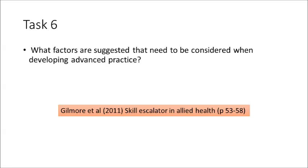For Task 6, read the Skill Escalator in Allied Health paper by Gilmore and answer this question: What factors are suggested that need to be considered when developing advanced practice? This is a good one to discuss in your groups, and as with all of these tasks, it's a good idea to bounce ideas off your group members.